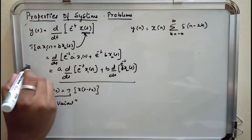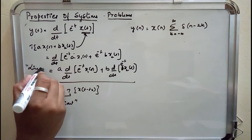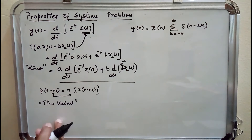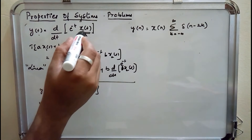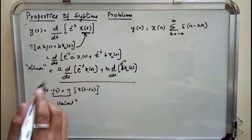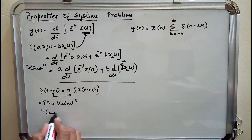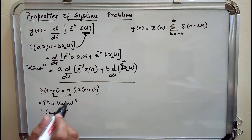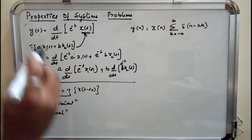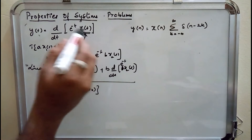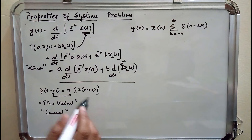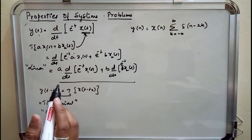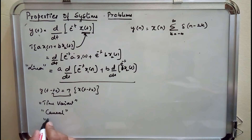So the first system is linear. The third property is causality. The output at one instant depends upon the input at the same instant, so we can directly say it is a causal system. Output at one instant depends upon the input at the same instant — this is not the necessary and sufficient condition for a system to have memory, so the system is memoryless.